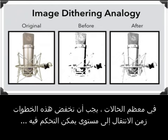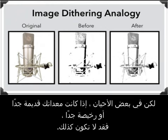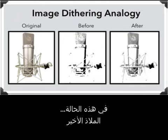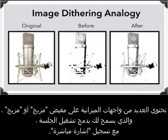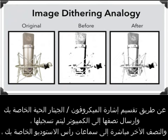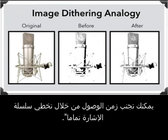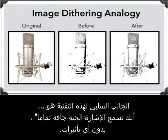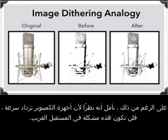In most cases, these steps should bring the latency down to a manageable level. But sometimes, if your gear is either too old or too cheap, it may not. In that case, the last resort: many budget interfaces have a mix or blend knob, which allows you to combine the session playback with the live signal being recorded. By splitting your live mic or guitar signal and sending half to the computer to be recorded and half directly to your studio headphones, you avoid latency by sidestepping the signal chain entirely. The downside is you hear the live signal completely dry with zero effects. Hopefully, since computers keep getting faster, this won't be an issue in the near future.